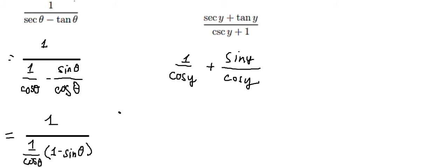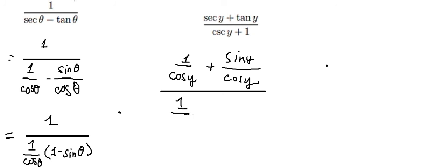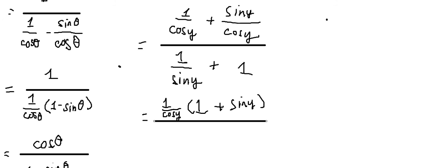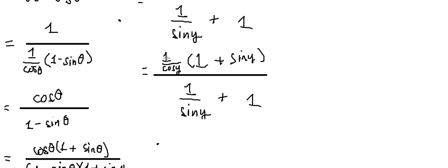We change cosine y to one over cosine y and one over sine y. We also have cosine y here, so we can do factorization. Next, I will multiply by sine y on the numerator and denominator.